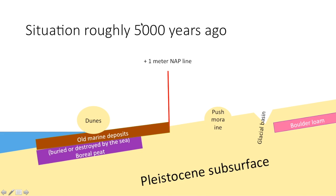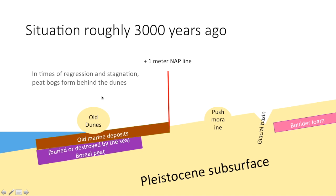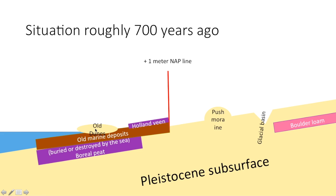In times of regression and stagnation, peat bogs form behind the dunes. The dunes that grew roughly 5,000 years ago were young at the time, but after 2,000 years they became old dunes — and the Holland Veen is located behind them. Between 5,000 and 3,000 years ago, a first set of old dunes grew from sand blowing inland, held in place by plant roots. Behind the dunes, stagnant water allowed peat to grow. Then sea level started rising more quickly again, storms eroded the old dunes, and the Holland Veen was destroyed by the sea — just as the buried boreal peat had been before it.